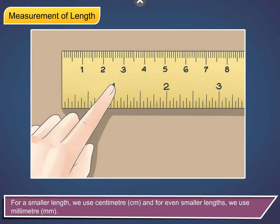For a smaller length, we use centimetre (cm), and for even smaller lengths, we use millimetre (mm).